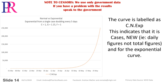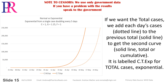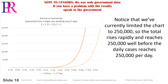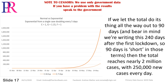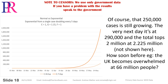The curve is labelled C.N.Exp. This indicates that it is cases, new — i.e. daily figures, not total figures — and for the exponential curve. If you want the total cases, we add each day's cases (dotted line) to the previous total (solid line), to get the second curve (solid line): total or cumulative, labelled C.T.Exp for total cases, exponential. Notice that we've currently limited the chart to 250,000, so the total rises rapidly and reaches 250,000 well before the daily cases reaches 250,000 per day. If we let the total run all the way out to 90 days — and bear in mind we're writing this 240 days after the first lockdown, so 90 days is short in those terms — then the total reaches nearly 2 million cases, with 250,000 new cases every day. Of course, that 250,000 cases is still growing. The very next day it's at 290,000, and the total tops 2 million at 2.225 million, not shown here.